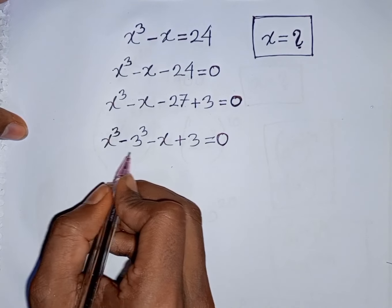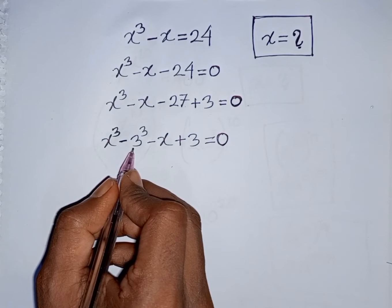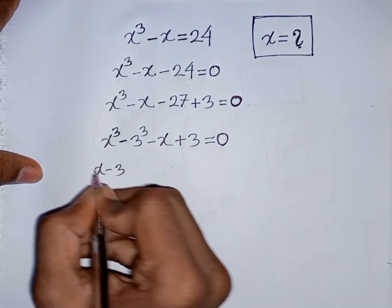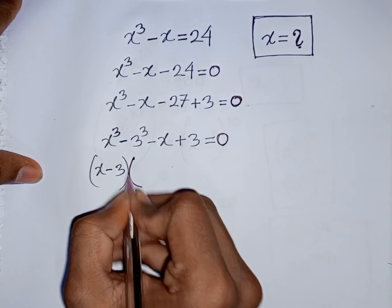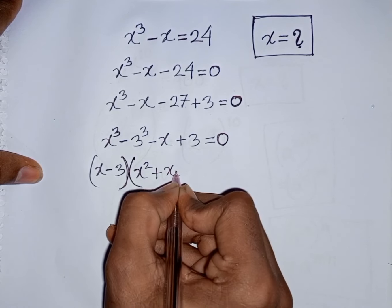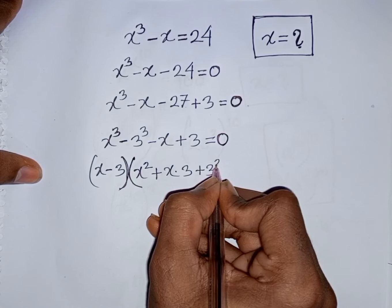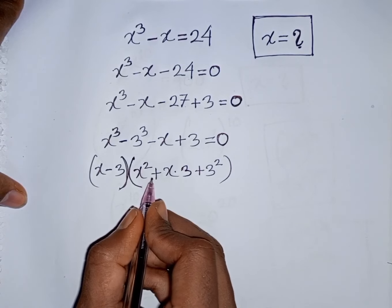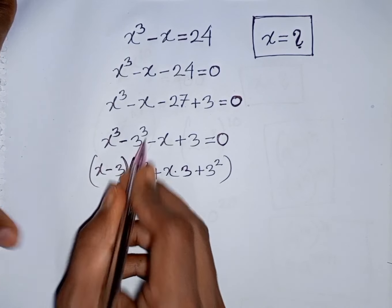Here you can apply the formula of a³ - b³, where a is x and b is 3. According to the formula, you can write: (x - 3)(x² + x·3 + 3²). That means (a - b)(a² + ab + b²). This is the formula for a³ - b³.